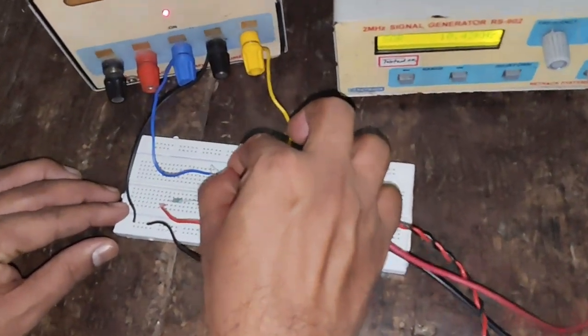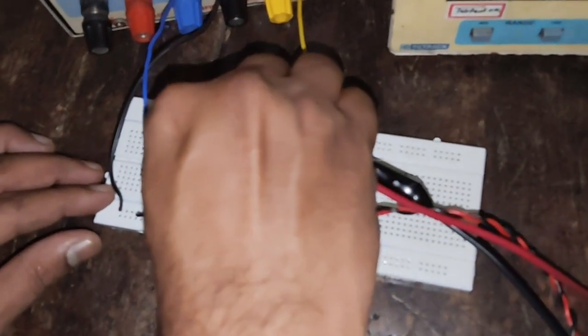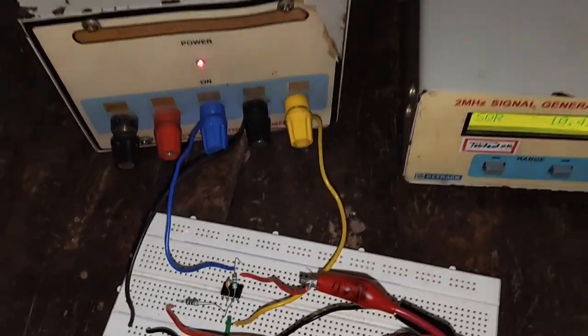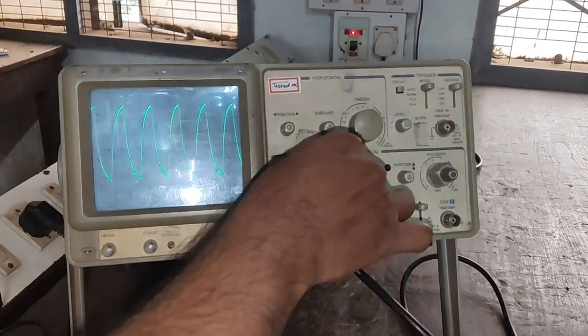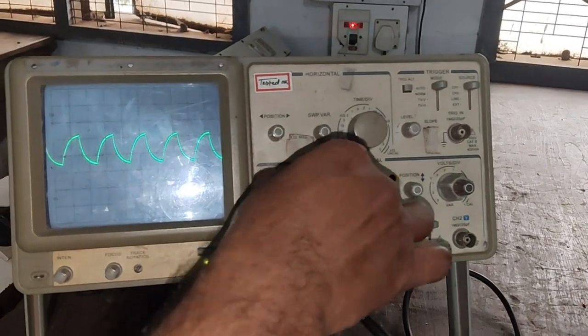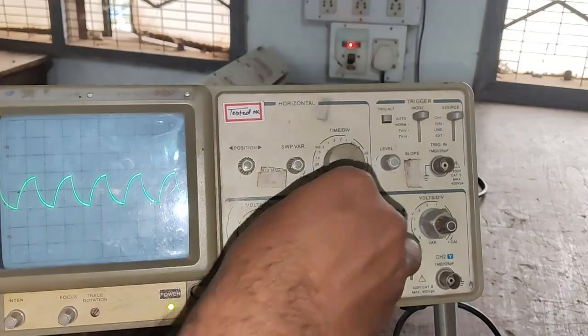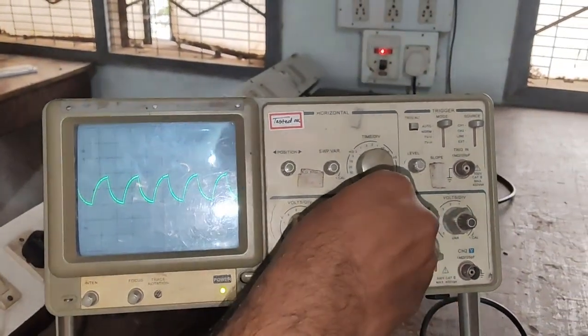This is pin number 4, 5 and 6. Here in the CRO we can see that we are obtaining the triangular wave for given square wave. We have to measure its width. Let's measure its width.